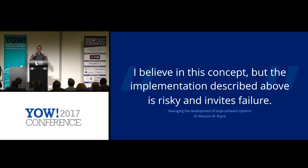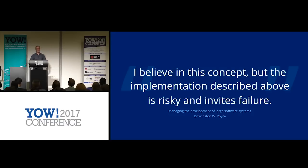What's unfortunate is that if companies and teams read the next section, they had this diagram with the arrows going back up again. So we fast-forward through the 70s, 80s, and 90s — through DSDM, RUP, SSADM, and a whole bunch of other techniques — and we get to 2001 and Agile.